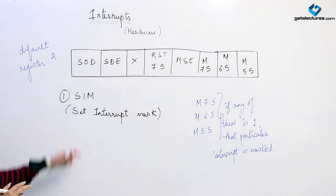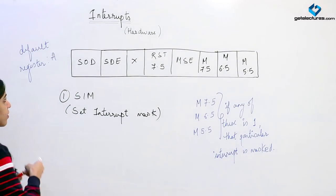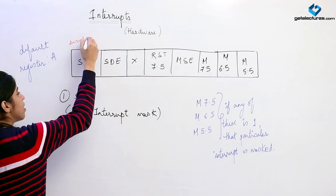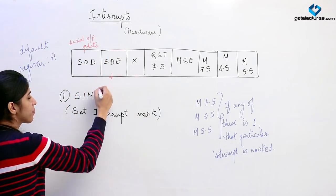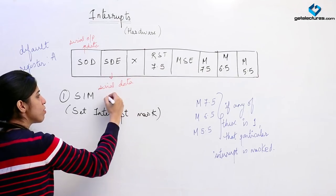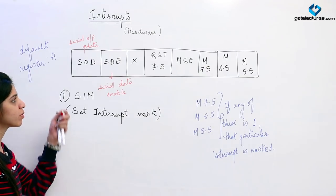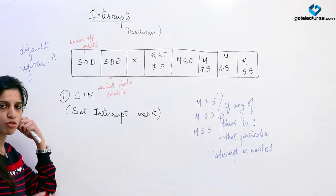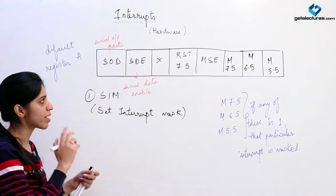The 8 bits of the accumulator are structured as follows: SOD (serial output data), STE (serial data enable), a don't-care bit, RST 7.5 reset, MSE (mask set enable), M7.5, M6.5, and M5.5. For now, we are focusing on the masking bits. Whenever the microprocessor wants to communicate serially with a device, we use the serial data pins.